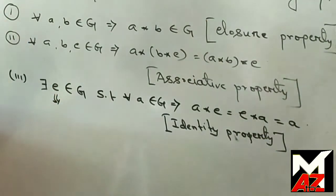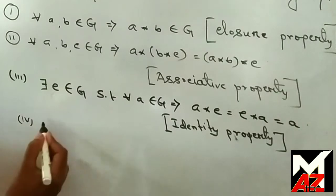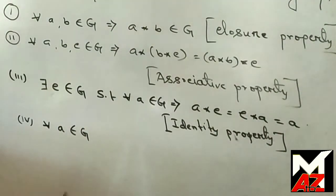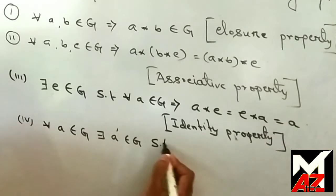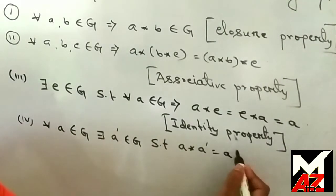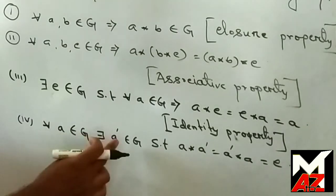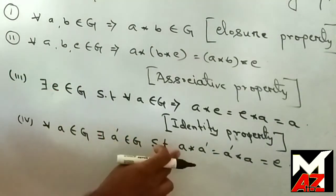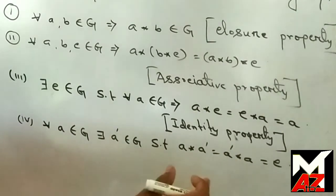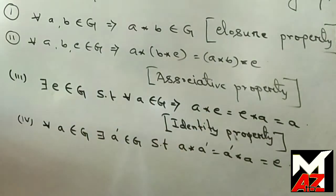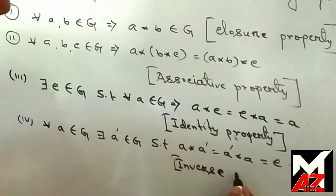The last property of the group: for all A belonging to G, there exists A' belonging to G such that A star A' equals A' star A equals E. For every A, there must exist A' in G such that A composed with A', and A' composed with A, both give the identity element. This property is called the inverse property.